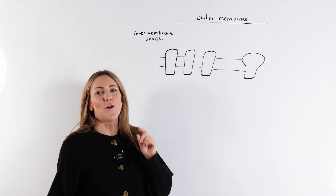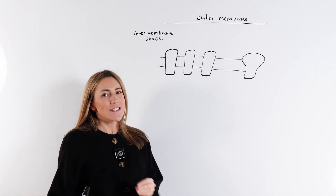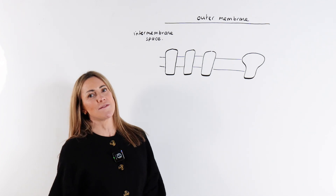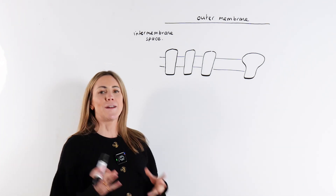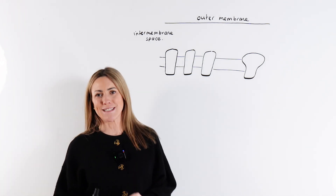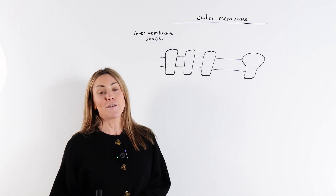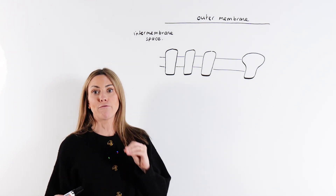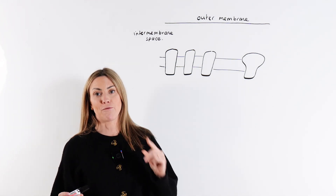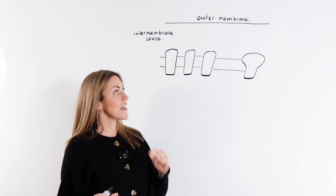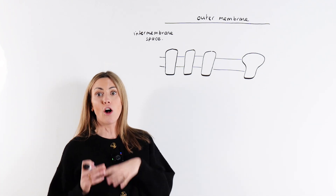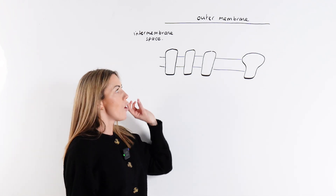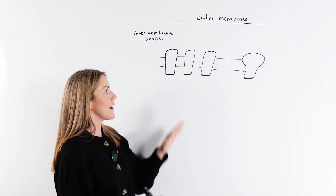Oxidative phosphorylation is the final stage of aerobic respiration, and this is taking place on the cristae, so on the inner mitochondrial membrane.